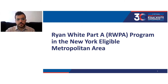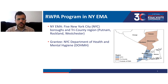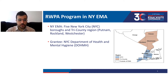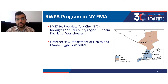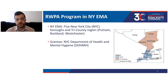The New York eligible metropolitan area, or EMA, is comprised of the five boroughs of New York City and the tri-county region of Putnam, Rockland, and Westchester counties, as you can see on the map on the right. The grantee of the Ryan White Part A program in the New York EMA is the New York City Department of Health and Mental Hygiene, or DOHMH — specifically, the Care and Treatment Program within DOHMH.